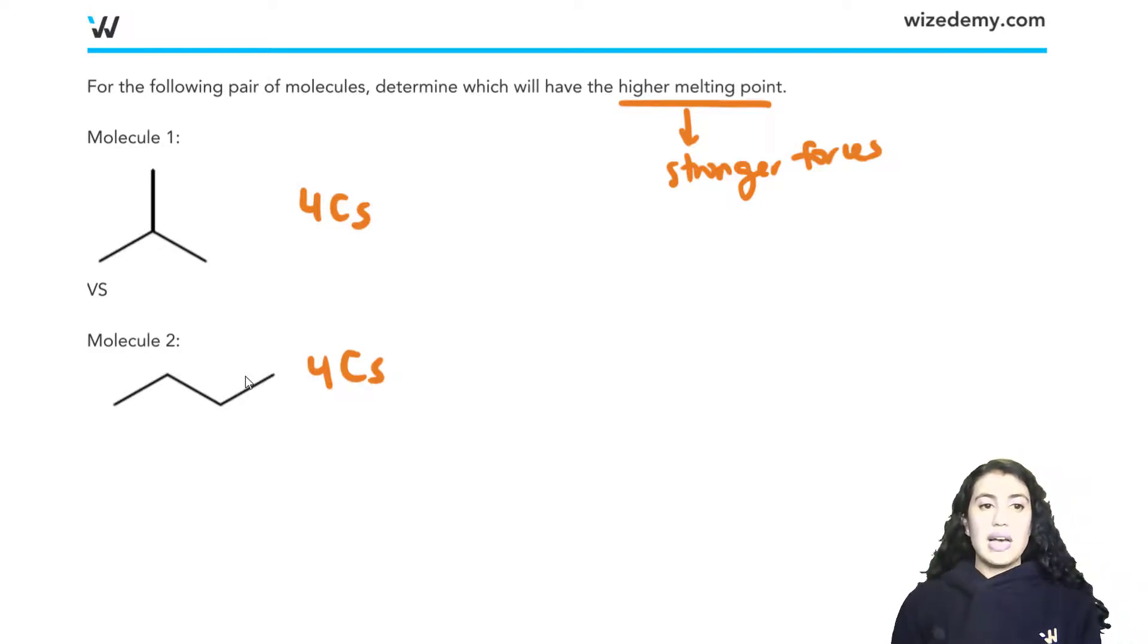So we mentioned that branching affects the melting point. So this is just checking our understanding. The first molecule has branching. We mentioned that like a tree's branches, compared to the trunk, the tree's branches are a lot easier to break off. And so this molecule is weaker because of the branches.